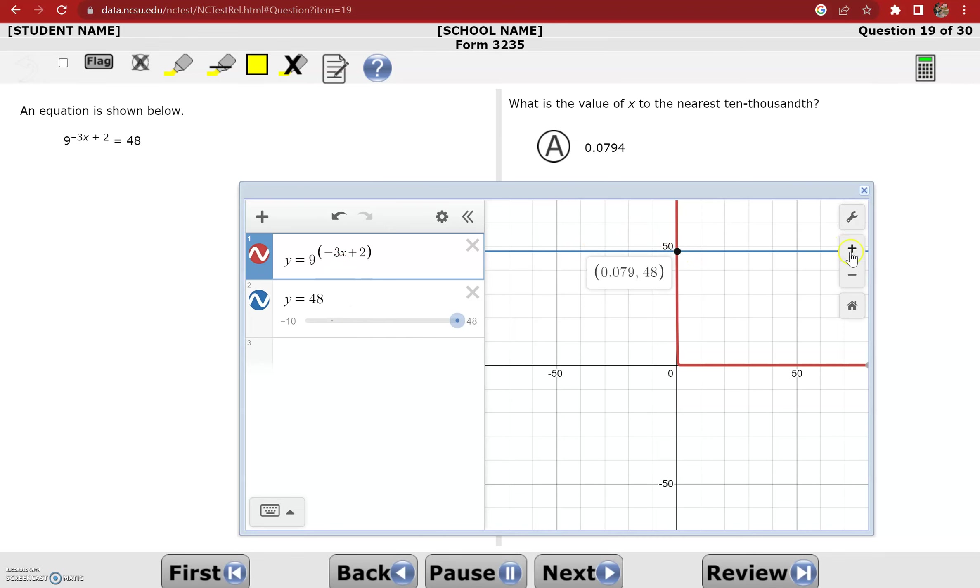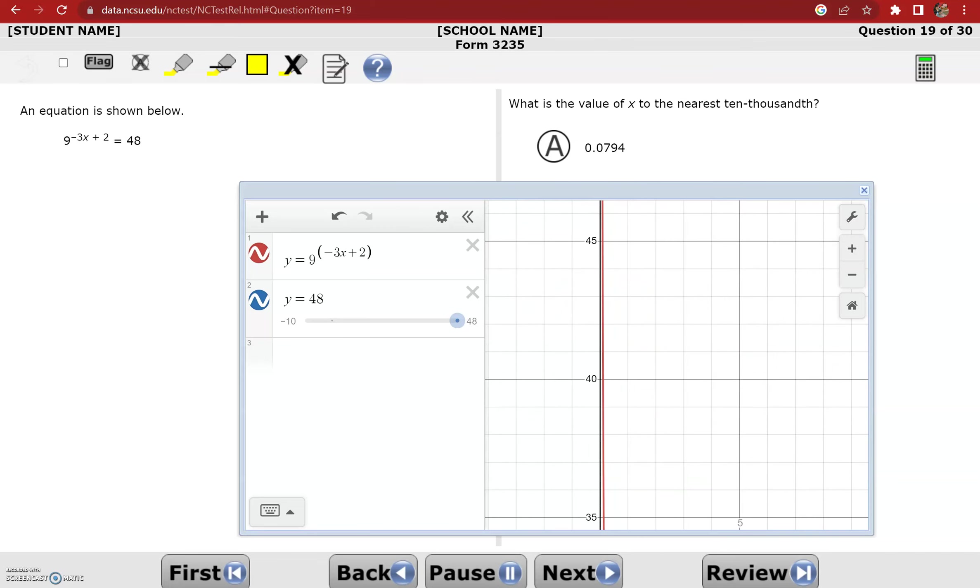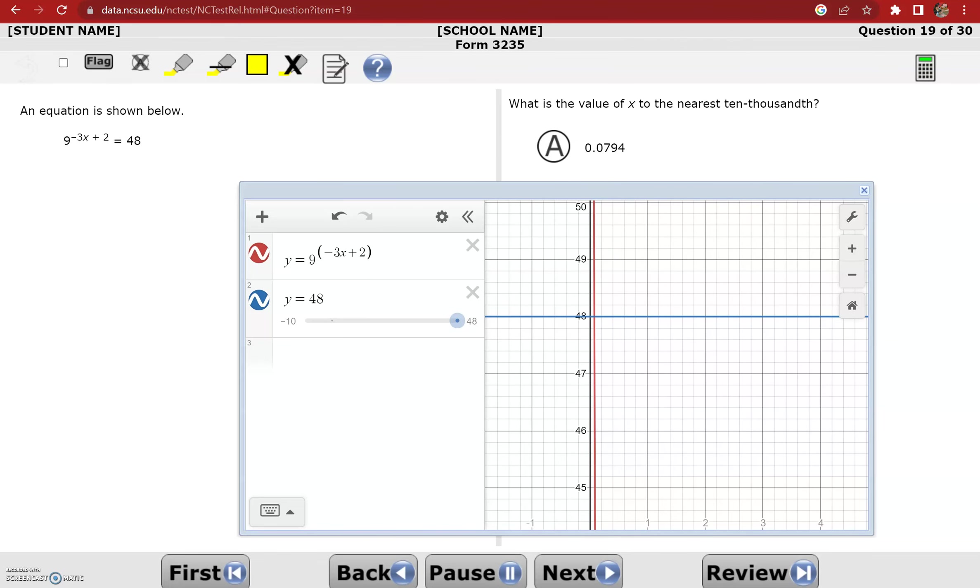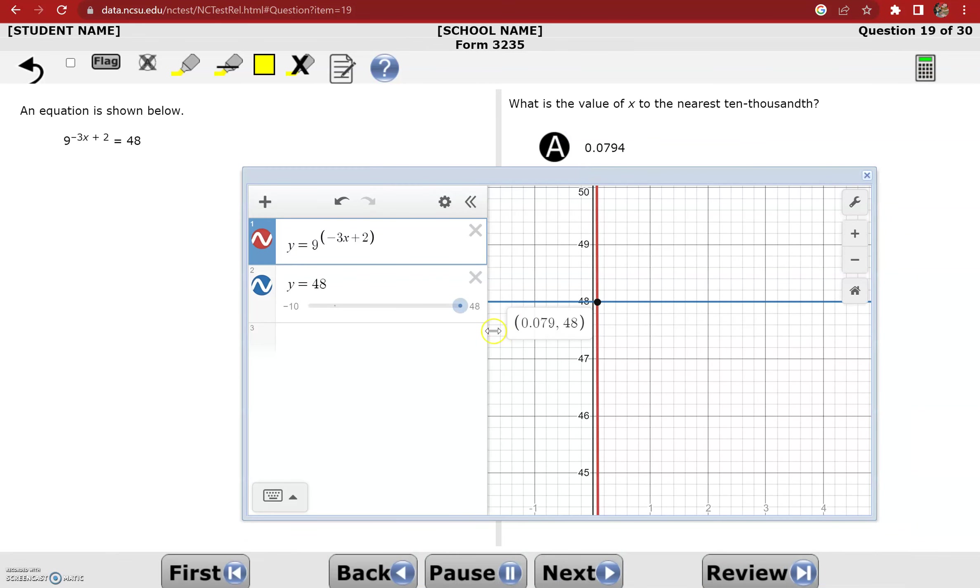So I can zoom in to make sure I'm getting the intersection point rather than some other point. And sure enough, .079 is that option, and there's no other ones that are close.